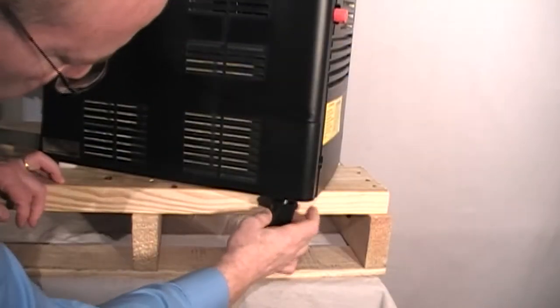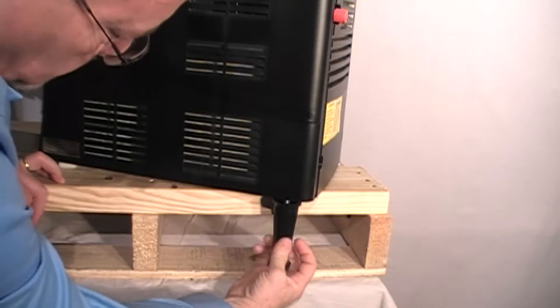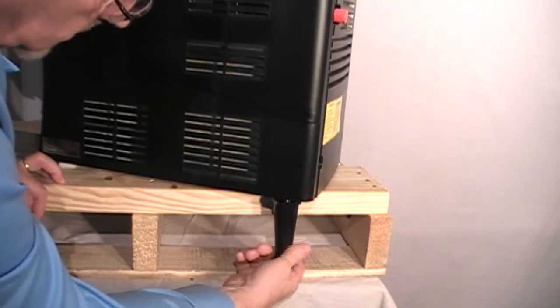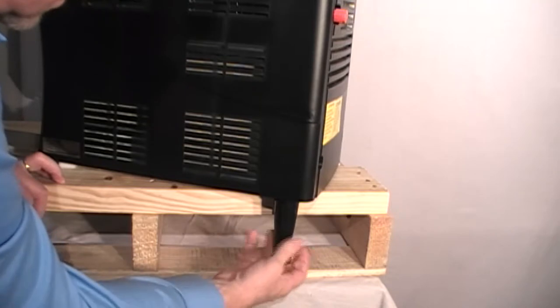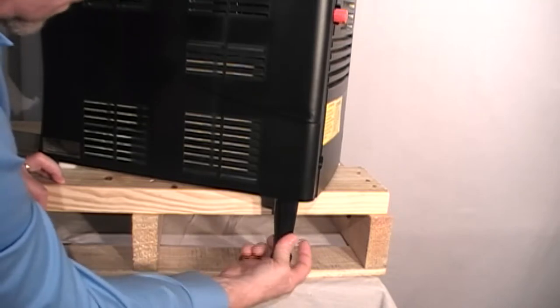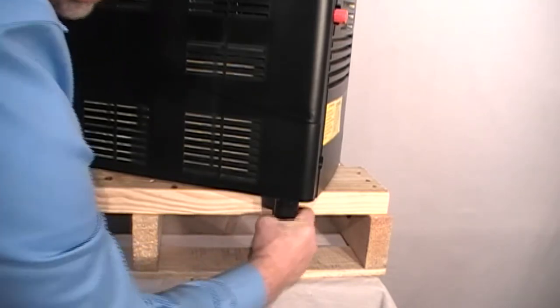Install the four legs provided into the underside of the unit by threading the legs fully into each corner. Do not lay the unit on its sides or back. The use of the wooden pallet to support the unit while installing legs may be helpful.